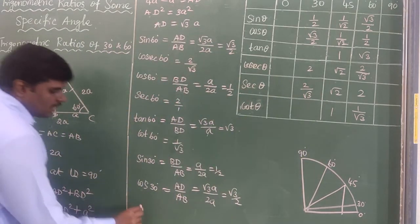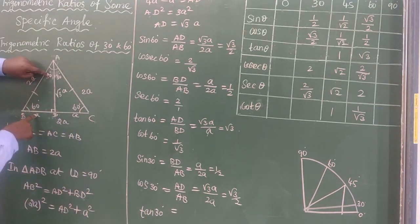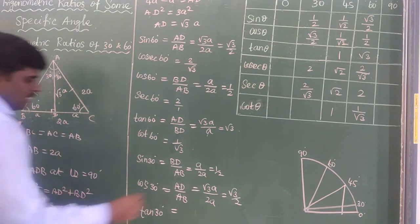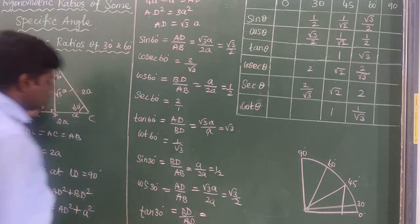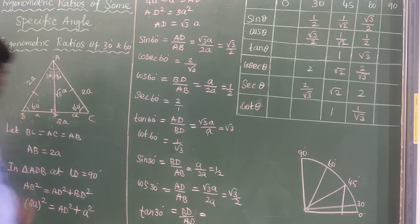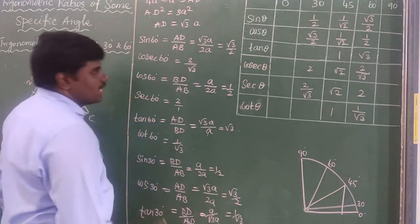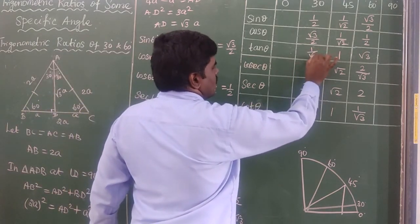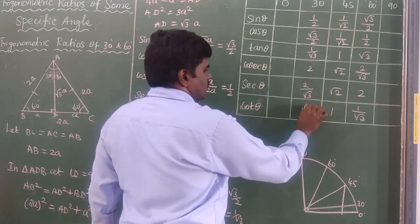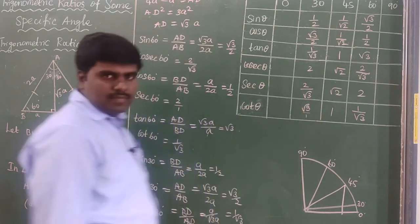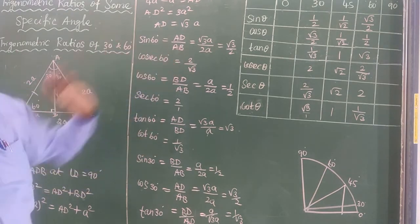Next, tan 30°. The formula is opposite side divided by adjacent side. Opposite side BD = A, adjacent side AD = √3·A. Simplifying: tan 30° = A / √3·A = 1/√3. Similarly, cot 30° is the reciprocal of tan 30°, so cot 30° = √3. These are all six ratios for 30° and 60°.